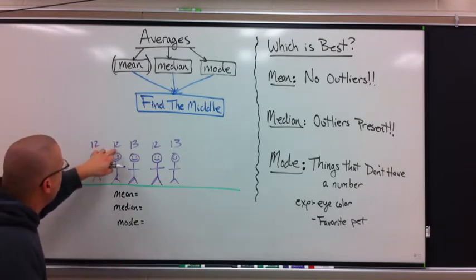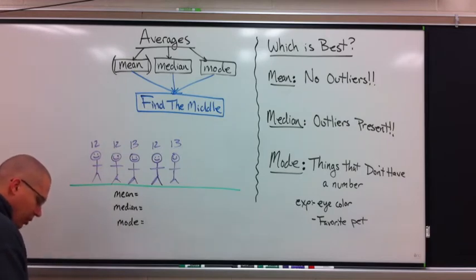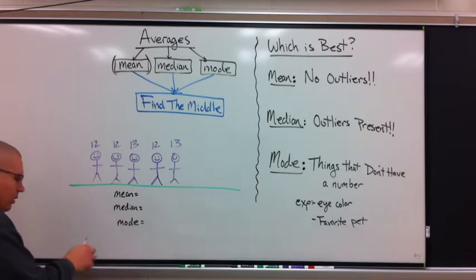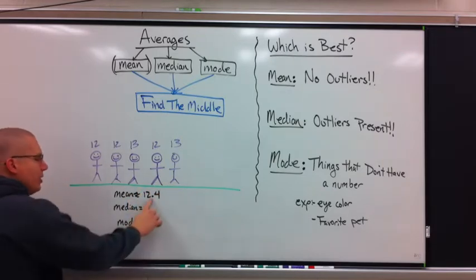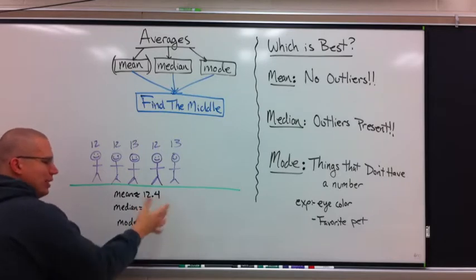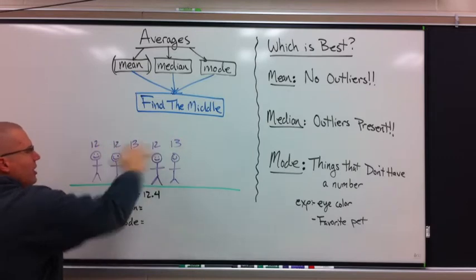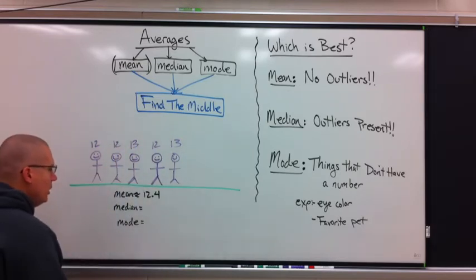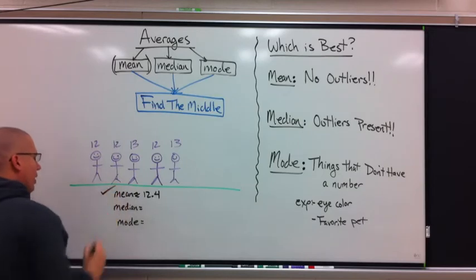So I'm going to do the mean first. I'm going to take 12, 12, 12, 13, 13, add them up and divide. I have 36 plus 26 equals 62, divide by 5 equals 12.4. Now, that should make sense because 12.4 is like 12 and a half. Does it make sense that 12 and a half is the middle of 12s and 13s? I hope so. Yes, is this in the middle of these numbers? I would say it is.